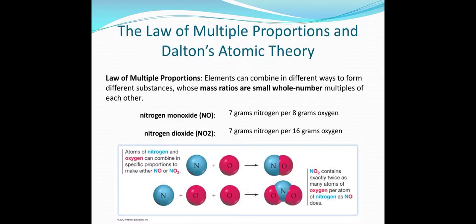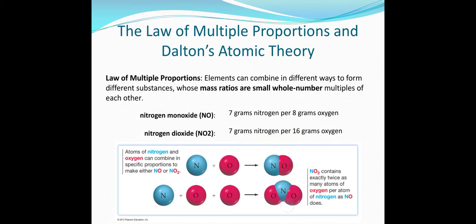The law of multiple proportions states that elements can combine in different ways to form different substances whose mass ratios are small whole-number multiples of each other. For example, nitrogen monoxide has 7 grams of nitrogen per 8 grams of oxygen, while nitrogen dioxide has 7 grams of nitrogen per 16 grams of oxygen. NO2 contains exactly twice as many oxygen atoms per nitrogen atom as NO.